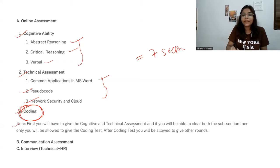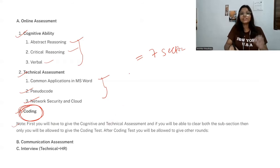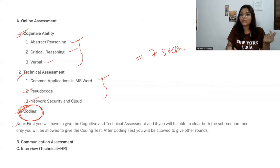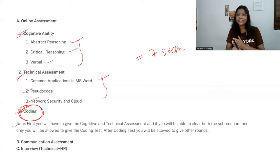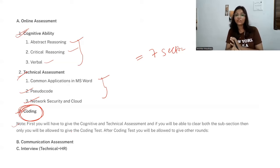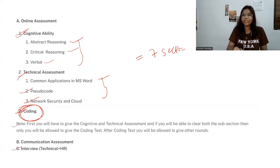An important note: first you will have to give the cognitive and technical assessment. Only if you clear both of those subsections will you be allowed to take the coding test. After the coding test, you will be allowed to give the communication round. The communication assessment is not an elimination round, but that doesn't mean you should take it lightly — sometimes candidates get rejected due to poor communication, and there should be no noise in the background.